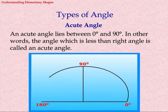Types of angles. Acute angle: An acute angle lies between 0 degree and 90 degree. In other words, the angle which is less than a right angle is called an acute angle.